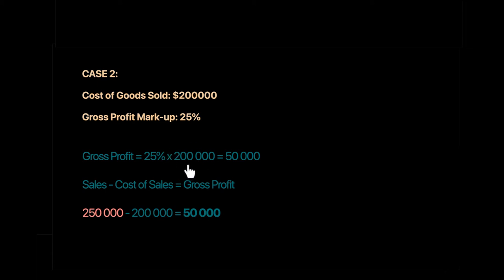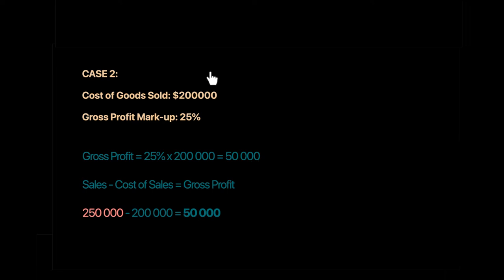Now that we know cost of sales and gross profit, the missing figure is sales = 250,000. You can simply add gross profit to cost of sales: 200,000 + 50,000 = 250,000.